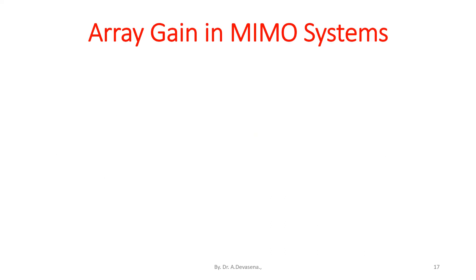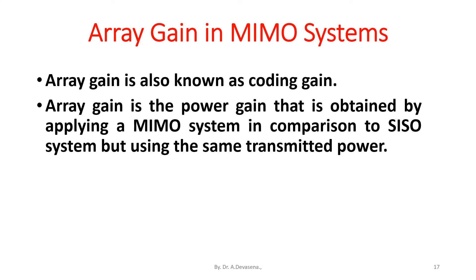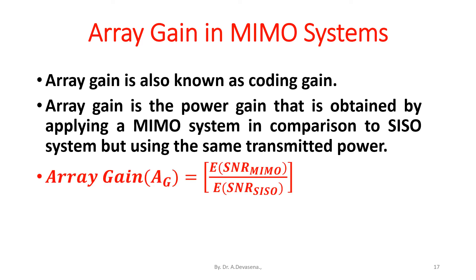Array gain in MIMO systems is also known as coding gain. Array gain is the power gain obtained by applying a MIMO system in comparison to a SISO system using the same transmitted power. Array gain A_G = E[SNR_MIMO] / E[SNR_SISO].